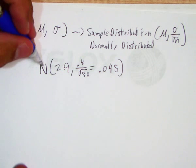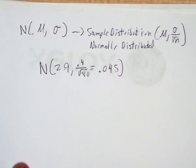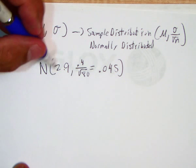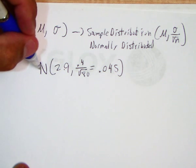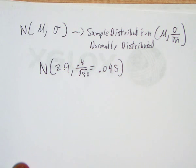We don't know if the original distribution was normal, I'm just using this as an example. But what we do know is that this sampling distribution is going to be normally distributed with a mean of 2.9 and a standard deviation of 0.045.